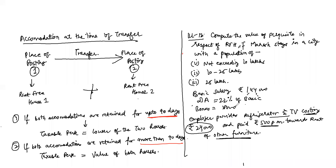So here the employer is giving furniture in both forms — owned and rented. Dipika, which illustration are you asking about — please mention the illustration number: Illustration 11 or Illustration 12?